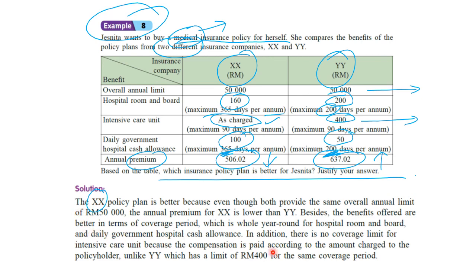That's how you choose your insurance policy and which company is better — they differ from company to company, so you have to be very wise and really check carefully. That's all for Chapter 3. I hope you can understand and it helps you to be a better math student, especially in this new chapter about insurance.